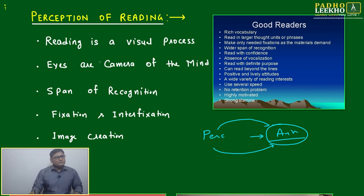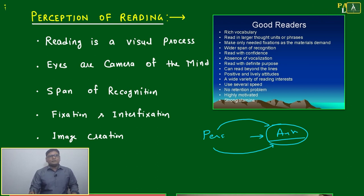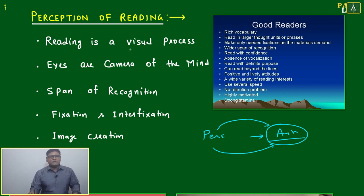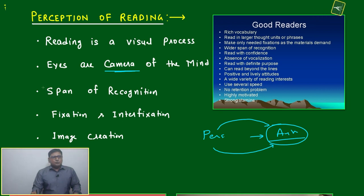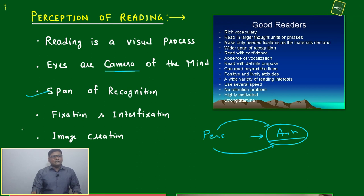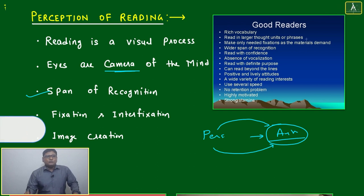Perception is a very important subject related to how the brain works and how the brain is perceiving. I have done a lot of research on this. If you want to know further, contact me on WhatsApp. Eyes are the camera of the mind. One key point is span of recognition — if you are reading, good readers read through larger units or phrases rather than word by word.